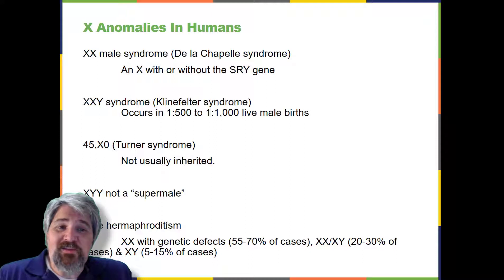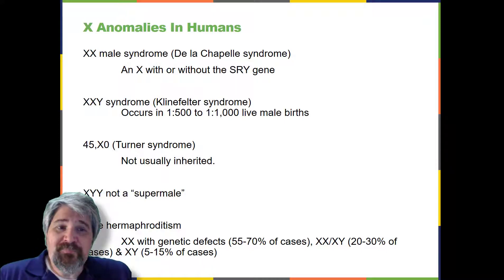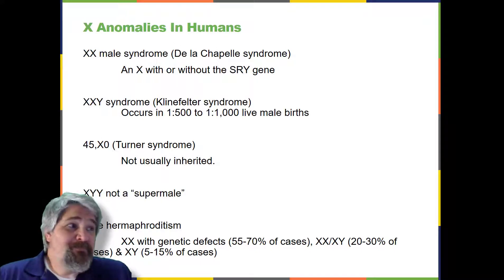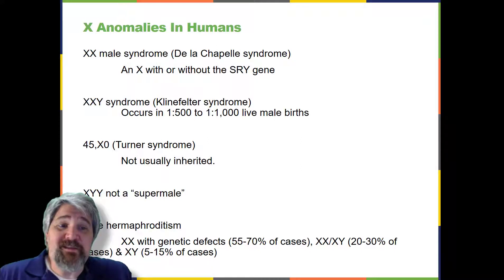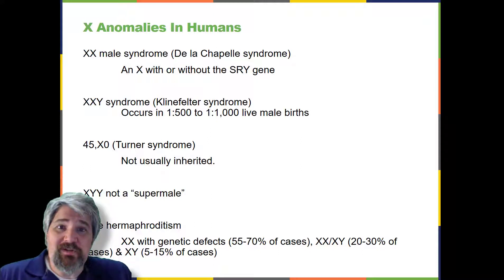Klinefelter syndrome individuals also have enlarged breasts and reduced body hair; the extra X chromosome undergoes inactivation to compensate for the excess genetic dosage. Turner syndrome, characterized as an X0 chromosome complement with only a single sex chromosome, corresponds to a female individual with short stature, webbed skin in the neck region, hearing and cardiac impairments, and sterility.